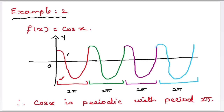Some real-life examples of periodic functions are planetary orbits, planetary rotation, length of a day, voltage coming out of a wall socket, and movement of a pendulum in a wall clock. Likewise, we have many examples.